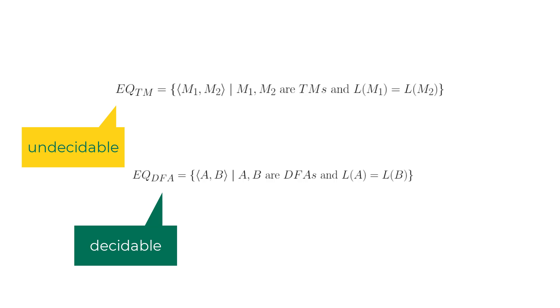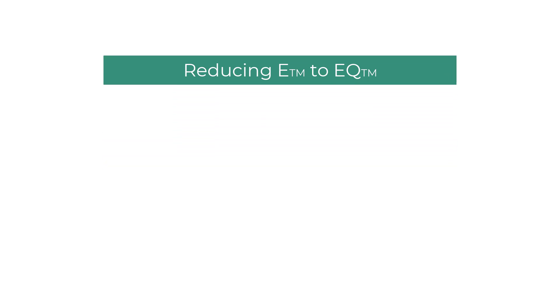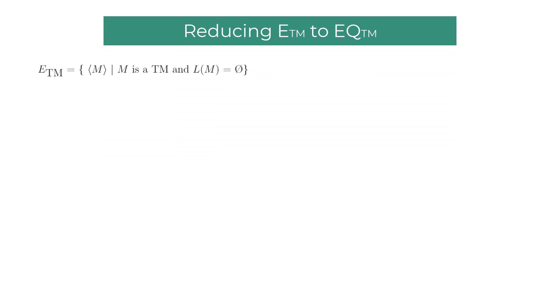To prove the undecidability of EQTM, let us reduce the ETM problem to EQTM. The technique will be the same. We assume a magical decider R exists for EQTM.